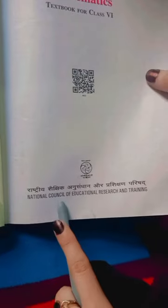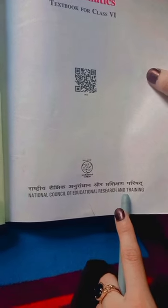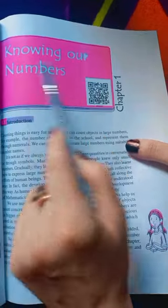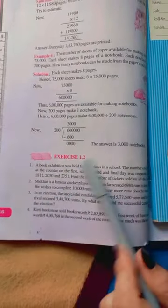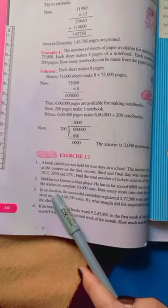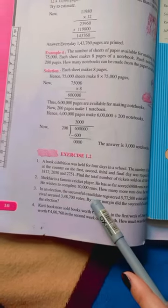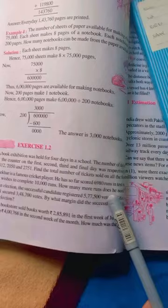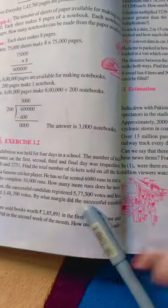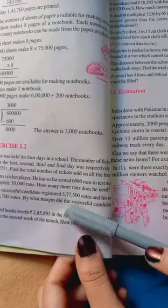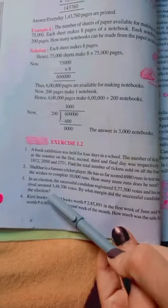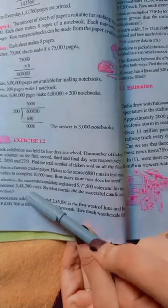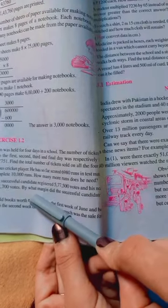Hello everyone, this is Shadeed and this is a mathematics and CRT base books class 6, exercise knowing our numbers chapter 1, exercise 1.2 question number 3. In an election the successful candidate registers 5 lakhs 77,500 votes and his nearest rival secured 3 lakh 48,700 votes. By what margin did the successful candidate win the election?